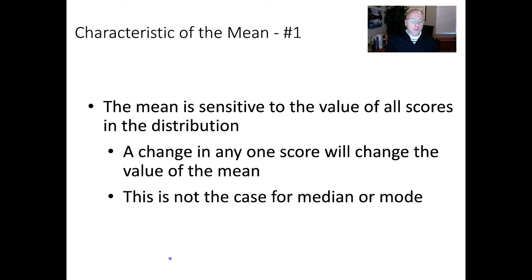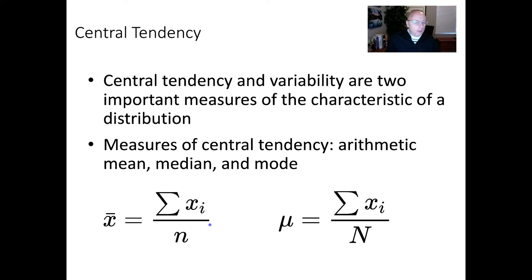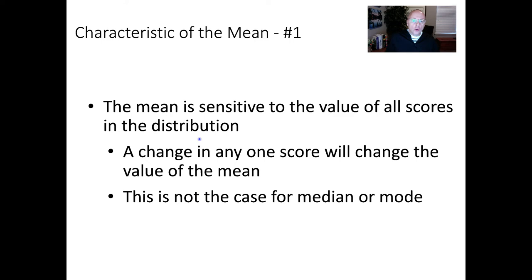I'm going to talk about some characteristics of the mean. First: the mean is sensitive to the values of all scores in the distribution. If we change any one score, the mean will change — we know that from the formula, because we're summing up all the x_i's. If we remove one and replace it with another value, we get a different mean. That characteristic doesn't apply for the median and the mode. This has some benefit, but also a downside we need to be aware of.